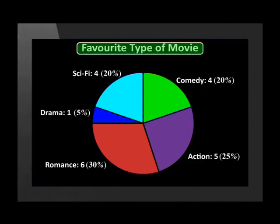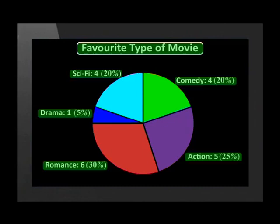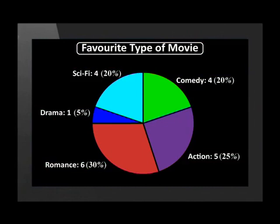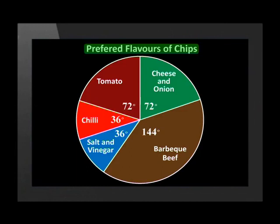Now let's look at pie charts. A pie chart is a circular graph that is divided into different sections or sectors. Each of these sectors represents the size of the data in relation to the whole. This pie chart shows people's favorite types of movies. Each sector has a label, a number, and a percentage. The number is the amount of people who like that type of movie. This pie chart shows the preferred flavors of chips. Each sector has a label inside the actual sector. Instead of showing a number or a percentage, the number of degrees per sector is shown.